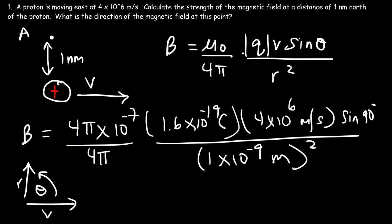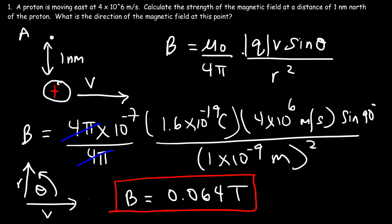Now 4 pi divided by 4 pi — these two cancel. So that's 1 times 10 to the negative 7, multiplied by 1.6 times 10 to the negative 19, times 4 times 10 to the 6. Sine 90 is 1, so we don't have to worry about that. Divided by 1 times 10 to the negative 9 squared. So the magnetic field at 1 nanometer from the proton is 0.064 tesla.